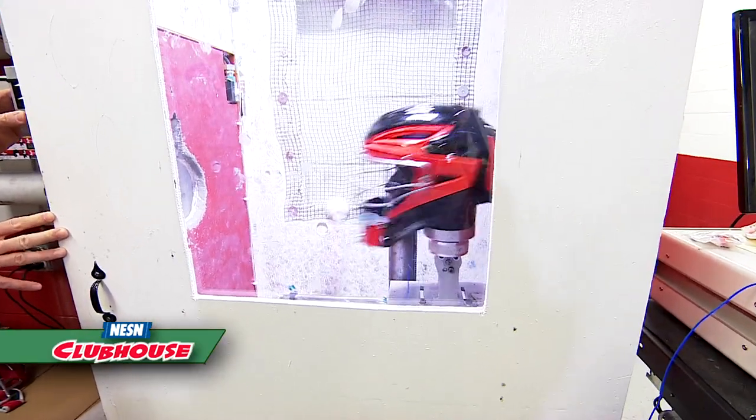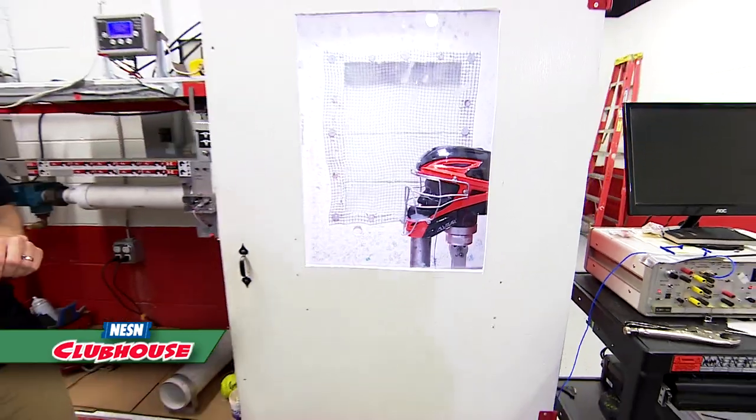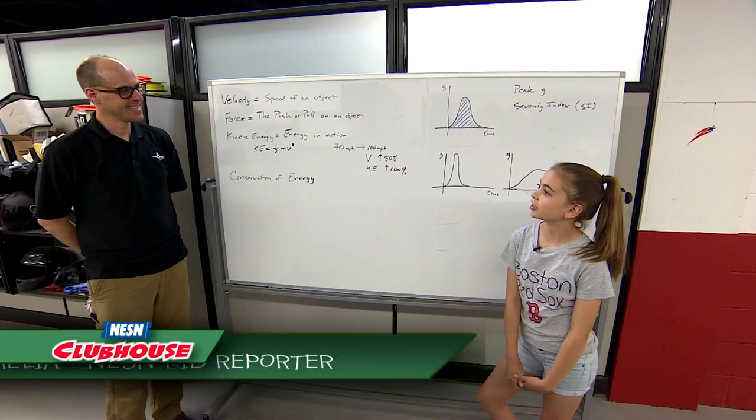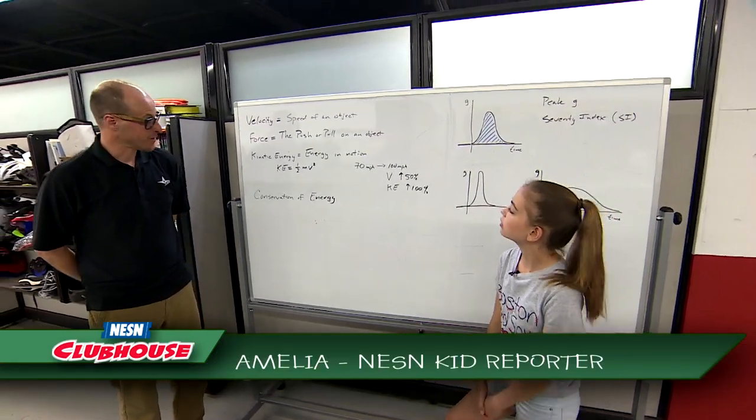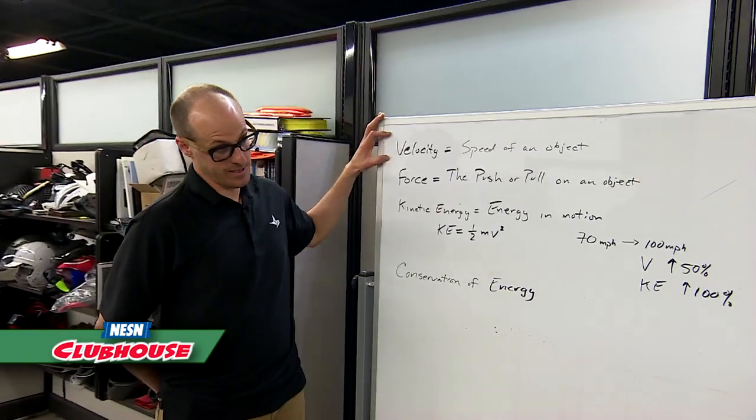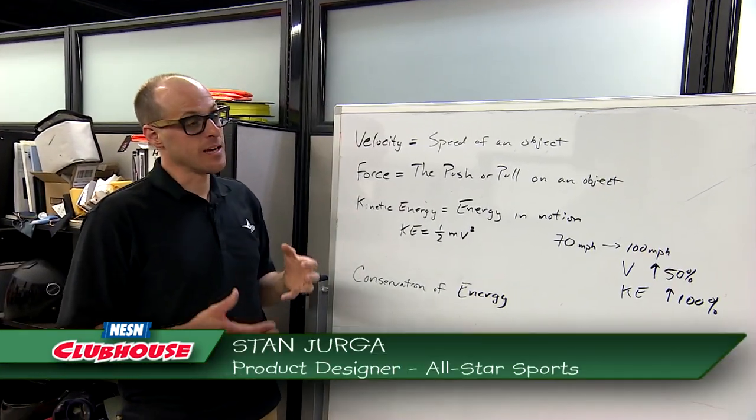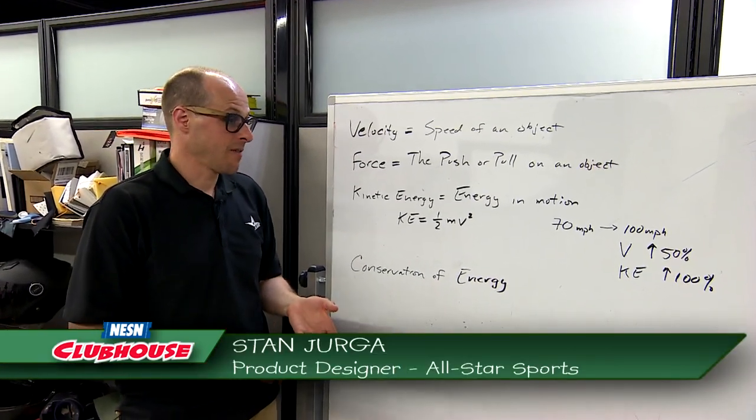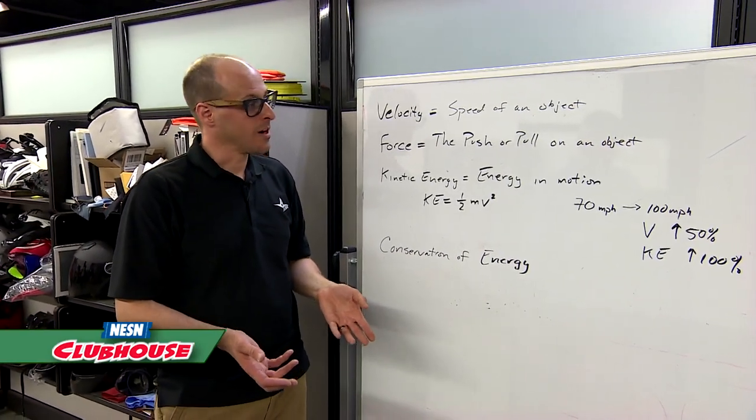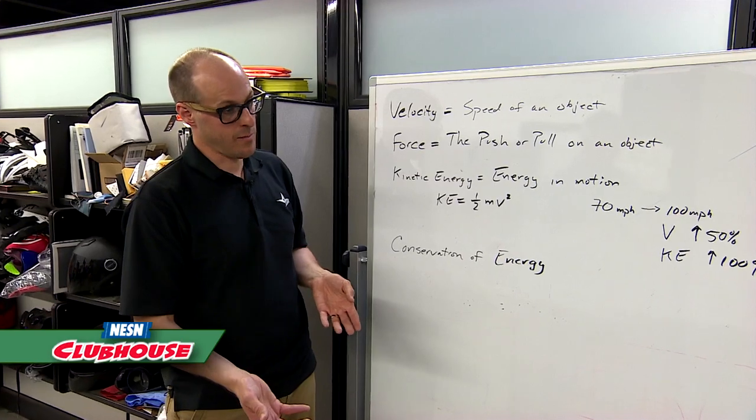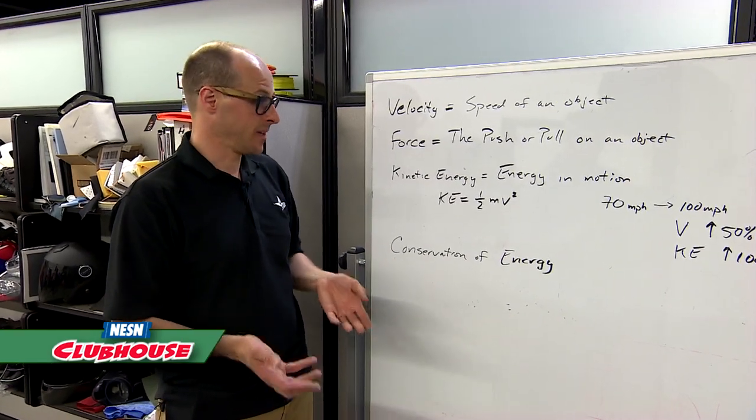We've learned a lot of scientific terms today. Could you explain some of these more in depth? Absolutely, so first let's talk about velocity. Velocity is the speed of an object - this could be how fast your car is moving down the street, how fast a pitcher is throwing the ball, or maybe the exit velocity of a baseball off a bat. Basically, it's how fast something is moving.